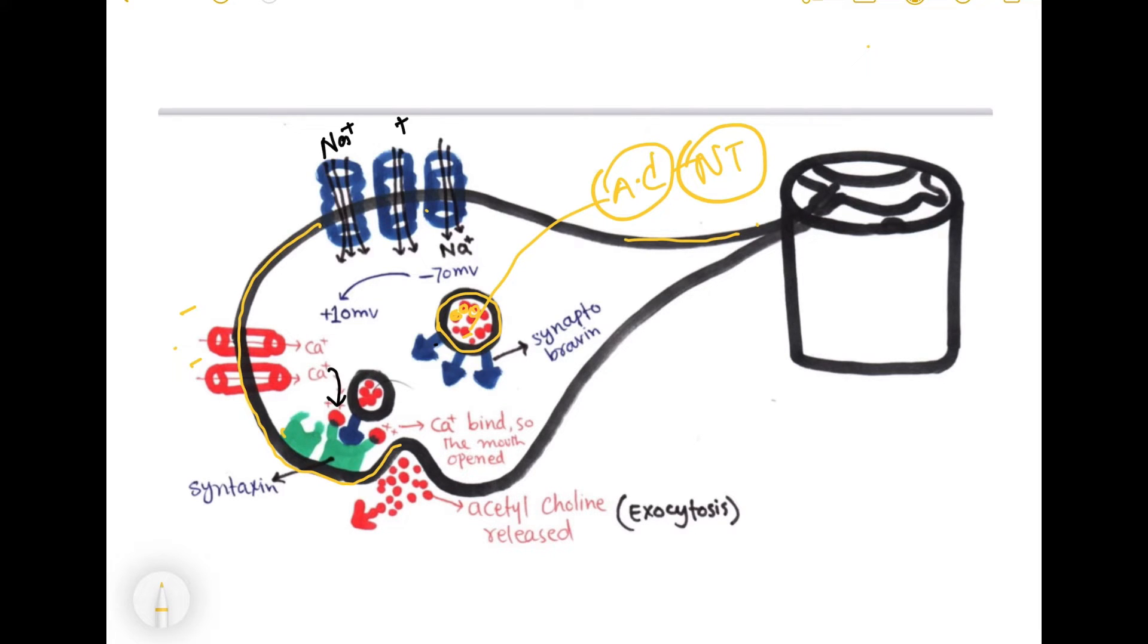When an action potential is generated, it passes across the membrane of the axon. The wave of depolarization comes to the nerve ending. After reaching the nerve ending, it causes the opening of voltage-gated sodium channels.